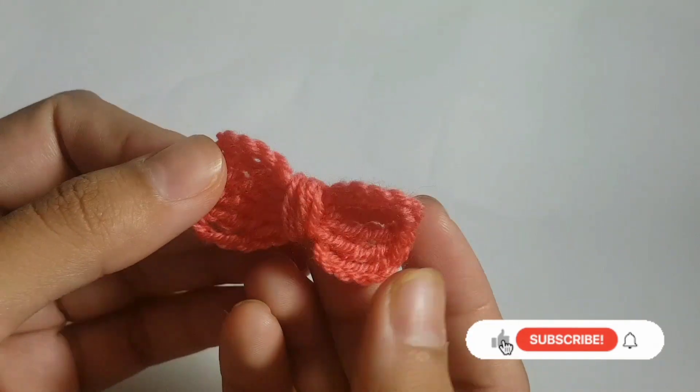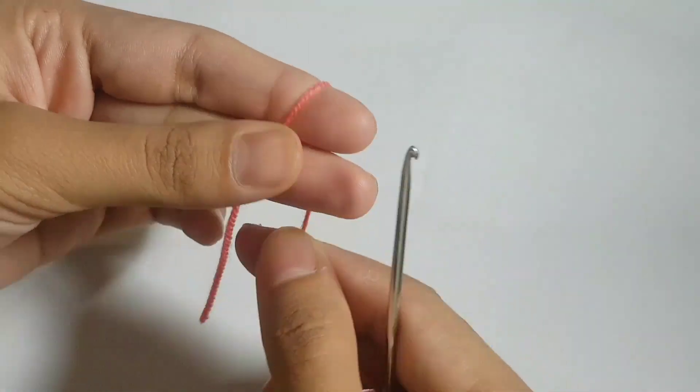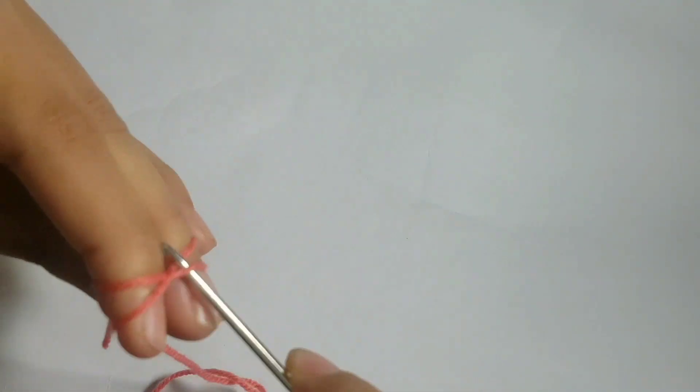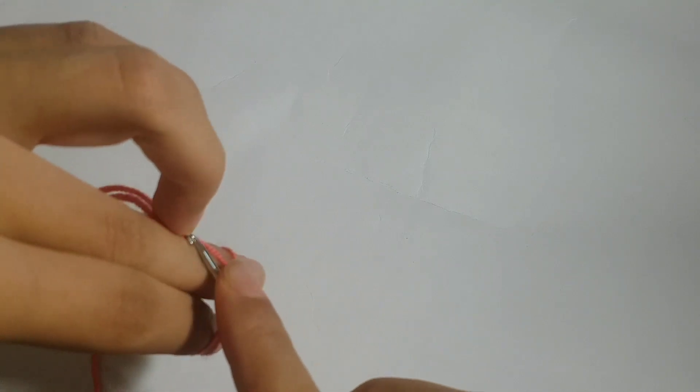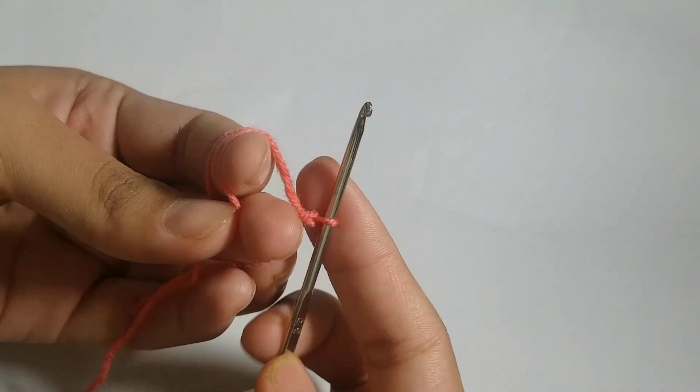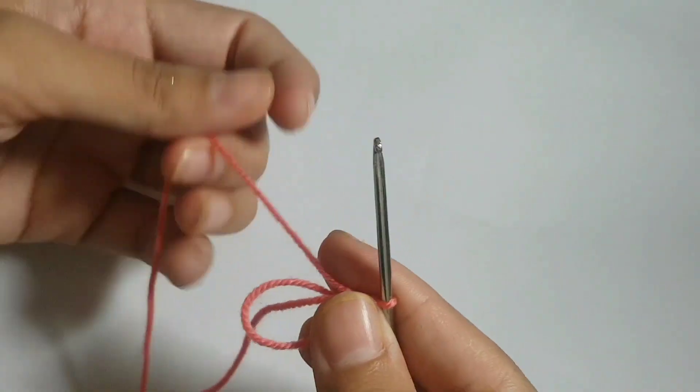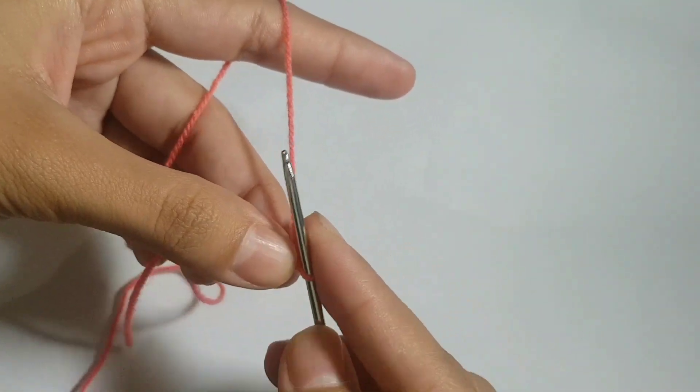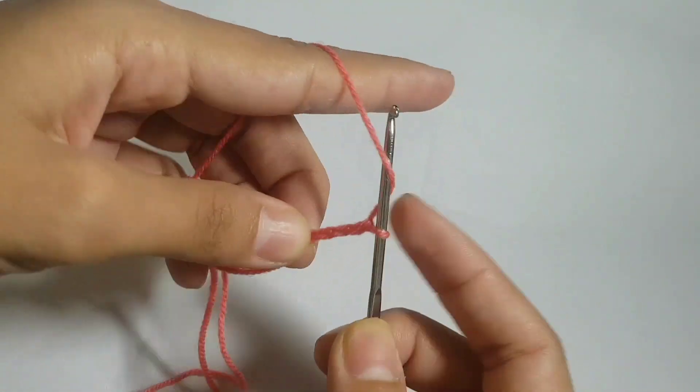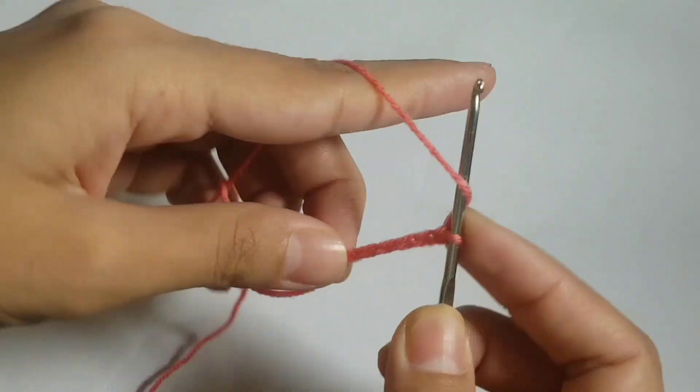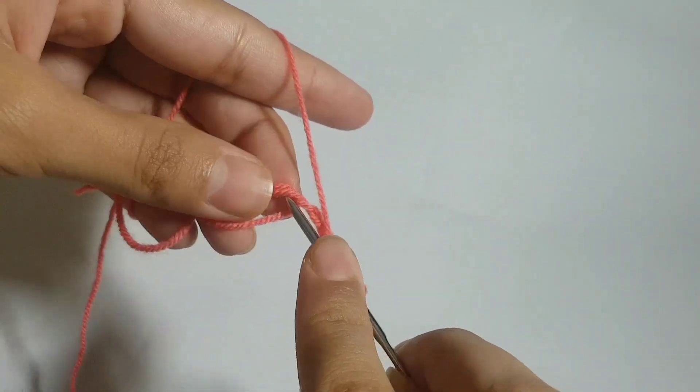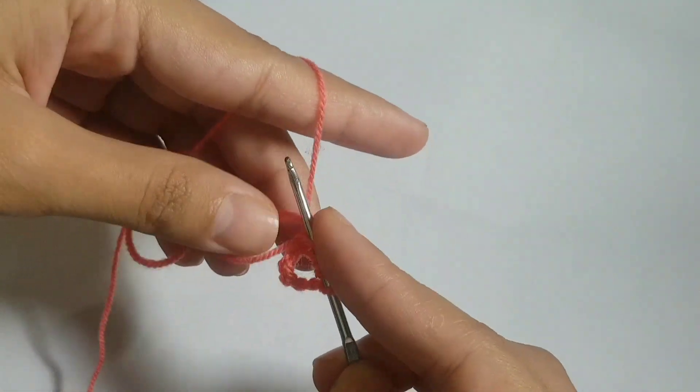With the help of a crochet hook, for making the bow we will make a magic ring. Then we will make a total of six chains, and now we will follow a double triple crochet pattern for a total of four times.